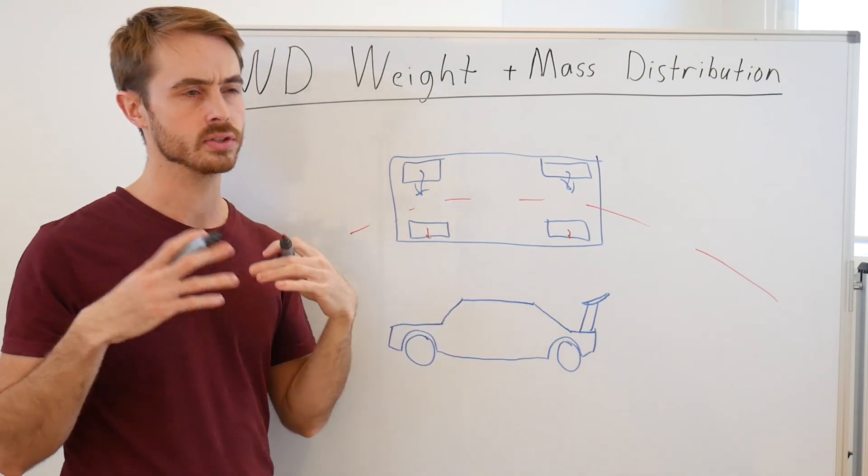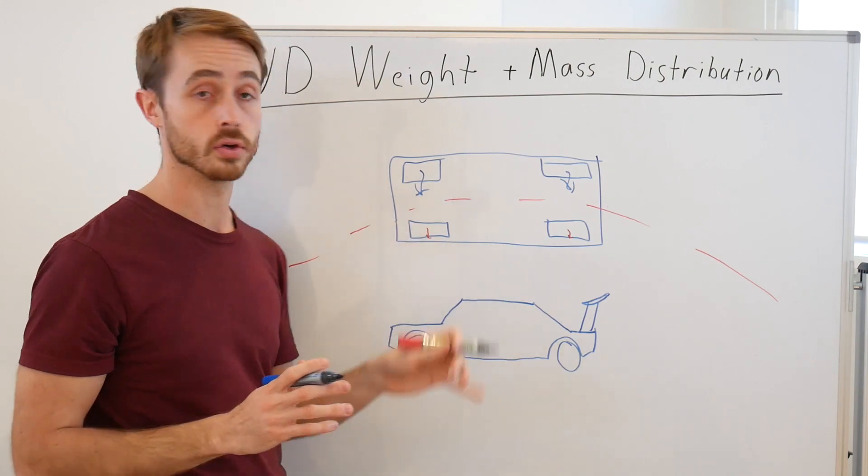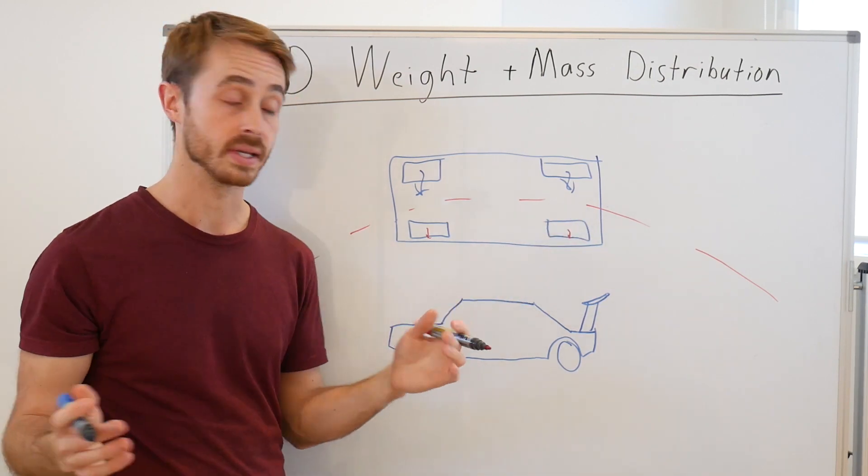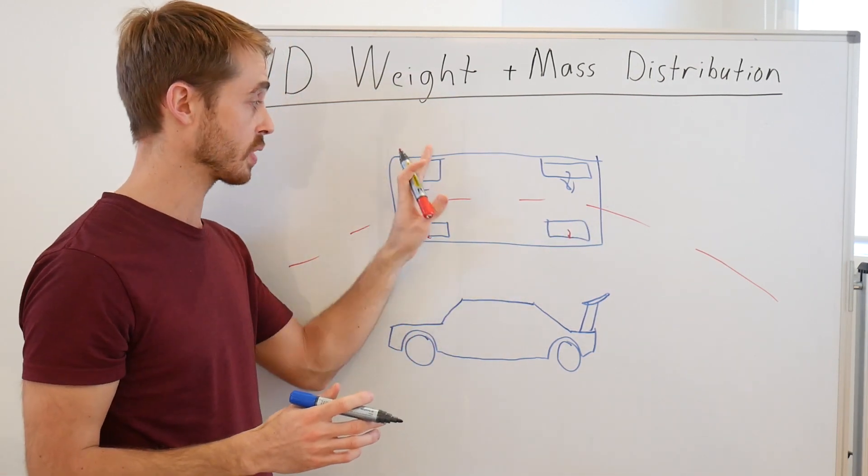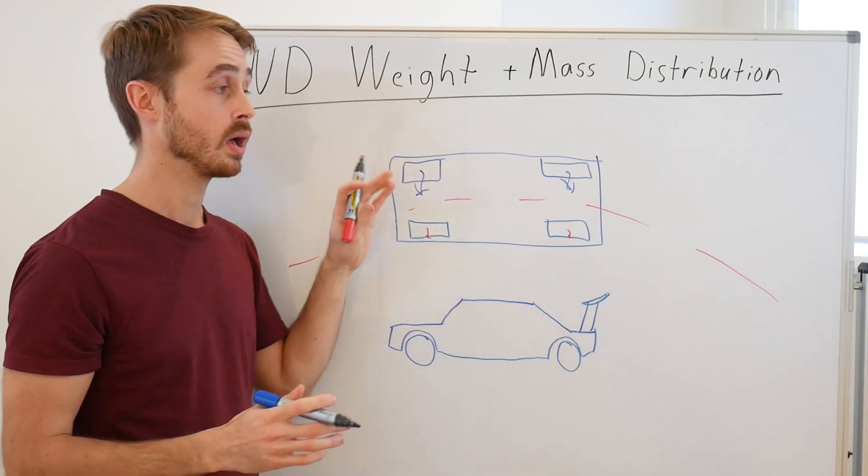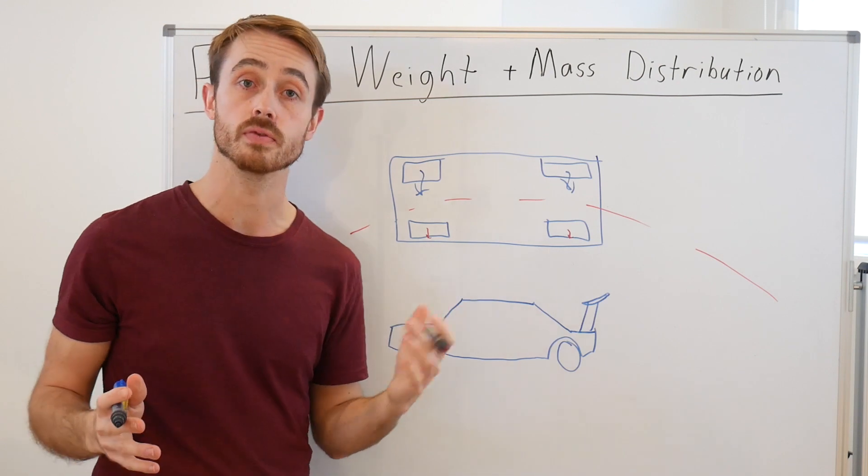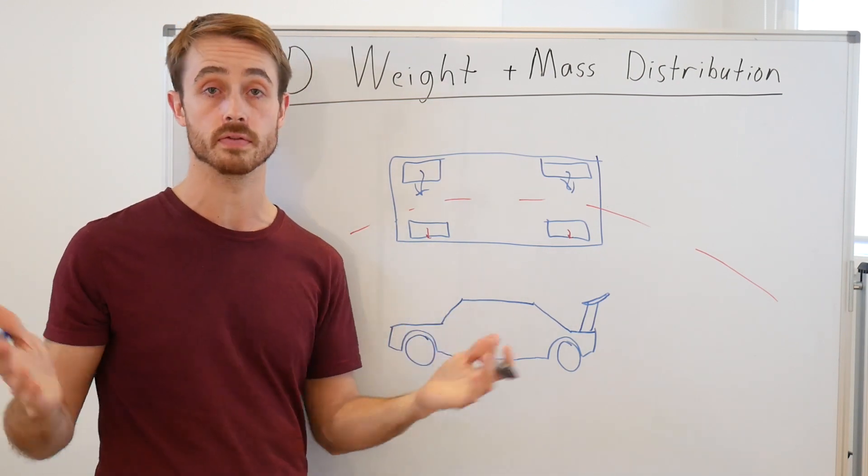Of course the problem comes when you start to do a transient maneuver. Let's say that in our example here of a front-wheel drive car we go to accelerate. Once we go to accelerate, our weight transfers off to our rear tires. That means we have less than the car's mass pressing down on the front tires.